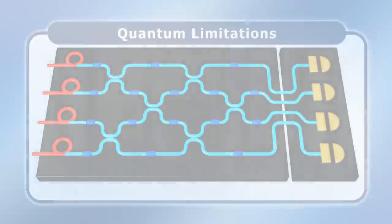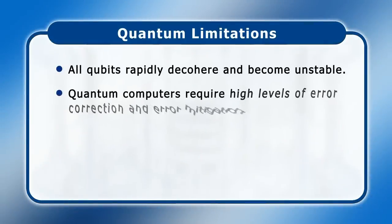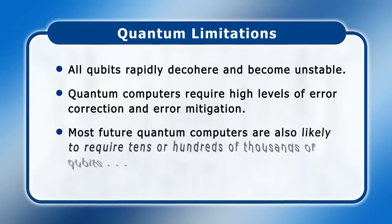Whether supercooled or not, all qubits rapidly decohere and become unstable. As a result, quantum computers require high levels of error correction and error mitigation. To perform useful work, most future quantum computers are also likely to require tens or hundreds of thousands of qubits. Given that current hardware generally offers no more than around 130 qubits, there is still a massive mountain to climb. So let's see what progress has been reported in the past 12 months.